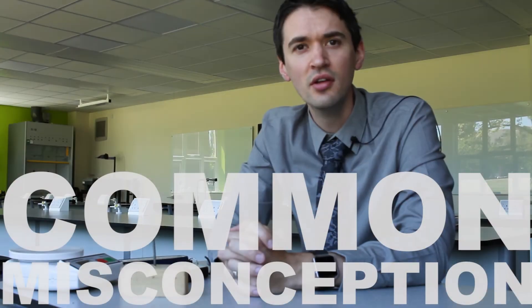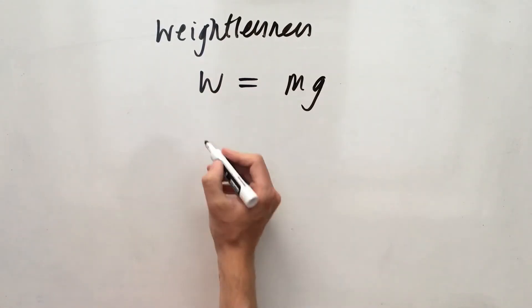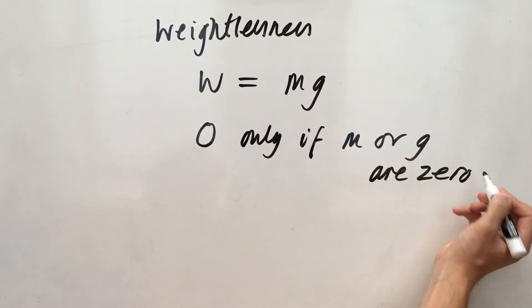It's a common misconception that students seem to have that if you take something into space, it becomes weightless. Now, if we have a look at the equation, which is what you need to be able to do, weight is mass times gravity. So the only way you can get something to be weightless is if the mass was zero or gravity was zero. Well, the mass doesn't change anywhere in the universe. So you go into space, your mass is still there. It's not zero.